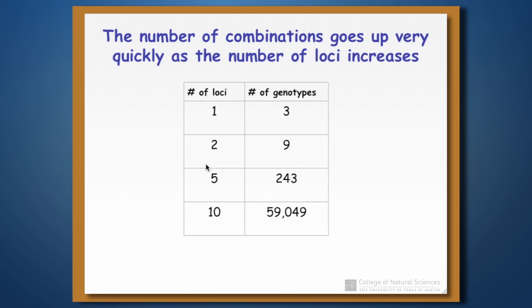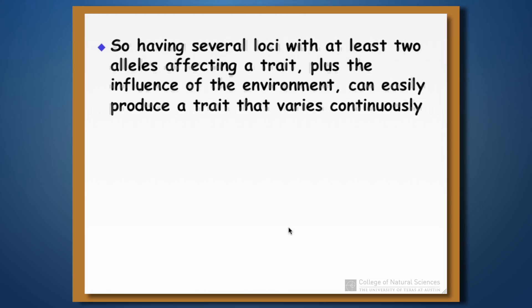As we increase the number of loci involved, we can very quickly increase the number of combinations of values. With one locus there are three genotypes; with two loci, nine unique genotypes; with five loci, 243 different genotypes; and with merely 10 loci, we're up to almost 60,000 different combinations. So with lots of loci, each with at least two alleles affecting a trait, plus the influence of the environment, you can easily end up with a trait that varies continuously — taking on pretty much any value within some range.